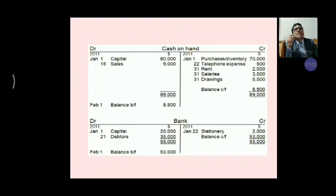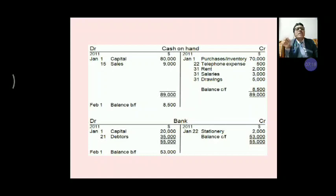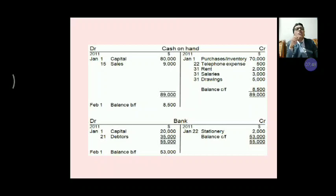Then, after preparing these entries, we will prepare the ledgers. First of all, we will prepare the cash account, or cash on hand account. These entries which we drafted now will be posted to their respective ledgers. So, in the first entry, 1st January, cash account is debited and capital is credited. How much is cash account debited? Rs. 80,000. So, capital Rs. 80,000. Then, by sales Rs. 9,000 — because goods were sold for cash.